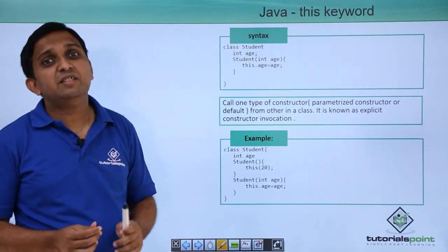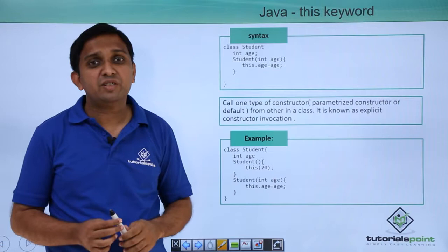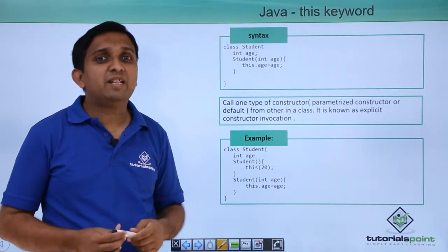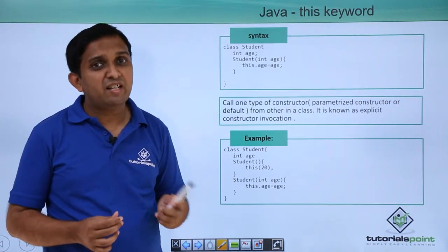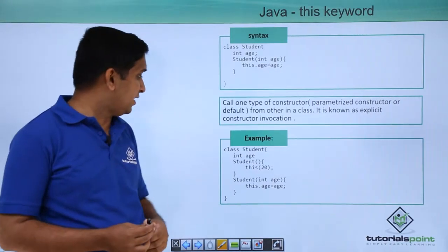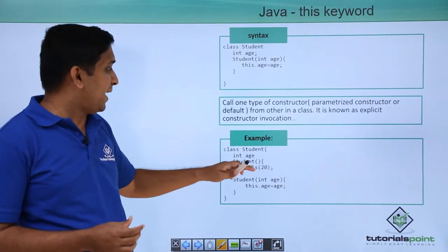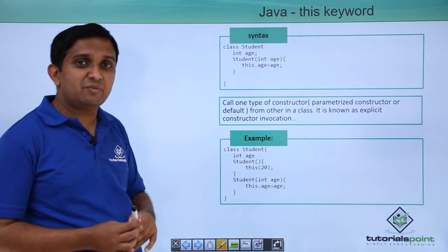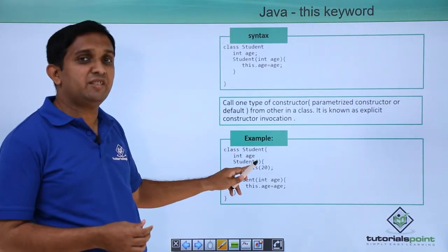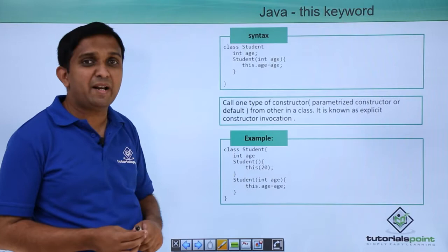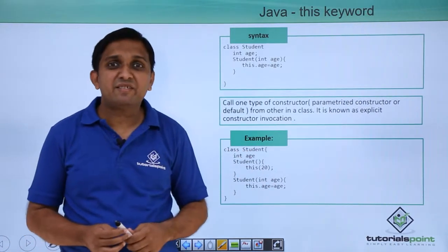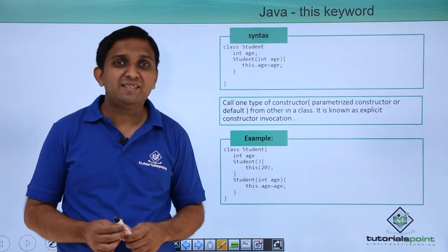The second case where the 'this' keyword is used is for constructor chaining. In Java we can call one constructor of a class from another constructor. If I want to call a parameterized constructor from the default constructor, this is the way: in the default constructor I write 'this' and pass the parameter, which will call the parameterized constructor of the same class.